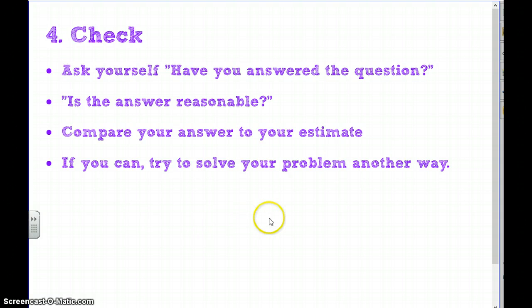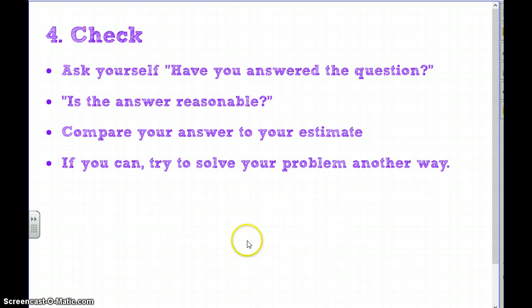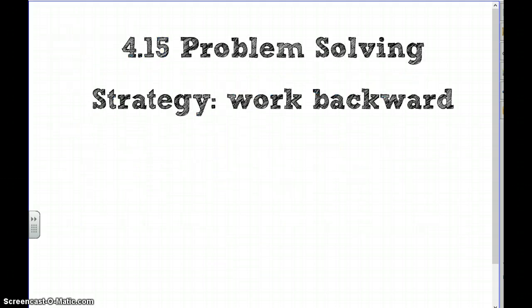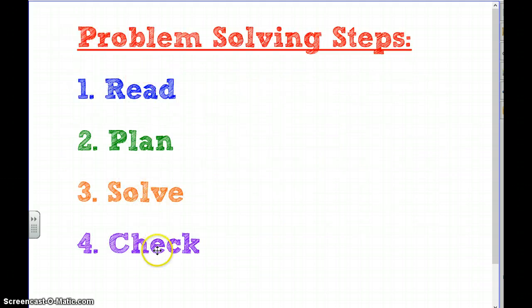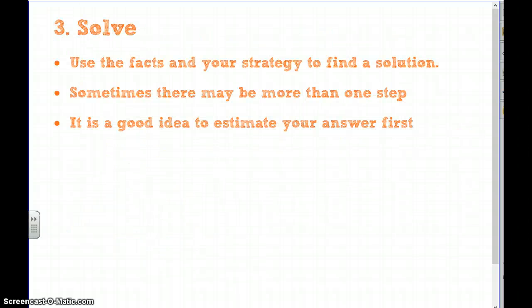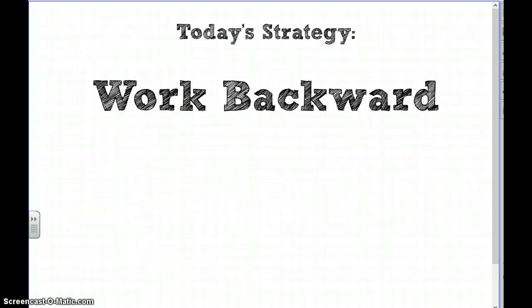If you can, try to solve the problem in another way. If you can't, write down how you know the answer is correct. Those are our four steps: read, plan, solve, and check. Our strategy today is to work backwards — I really love this strategy and I think you're going to have fun with it.